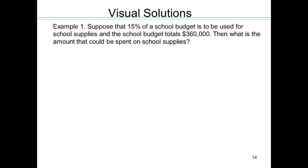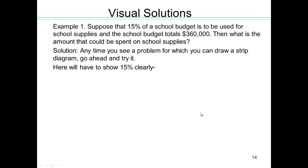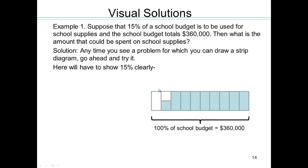All right, this next part is going to look at how multiplication is going to be used. So we saw before that fractions, another interpretation of fractions is percentage. So let's do some visual solutions in interpreting percentages. Suppose 15% of a school budget is to be used for school supplies and the school budget totals $360,000. Question is, what is the amount that you can spend on school supplies? So to visualize, I draw a strip diagram. So I've broken my whole into 10 equal pieces. So each vertical strip represents 10%. This will represent 5% because it's half of the 10.